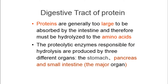Proteins are macromolecules that must be broken down into smaller components known as amino acids. To do this, we need the help of enzymes — specifically, proteolytic enzymes. 'Proteo' refers to protein and 'lytic' refers to breakdown. These enzymes break down protein macromolecules, and this process takes place in different parts of our bodies.